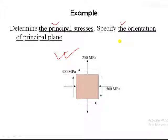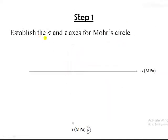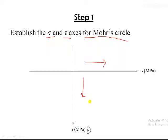First we have to establish the normal stress and shear stress axes. Sigma will be taken as positive to the right and Tau will be taken as positive downward. So the left side will be negative for normal stress, and the upside will be negative for shear stress.